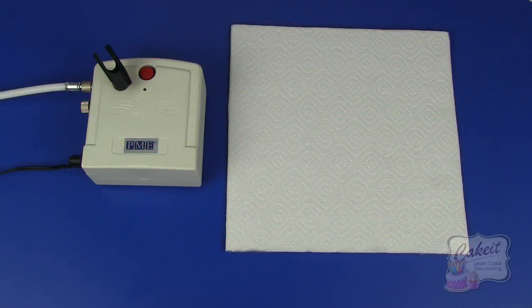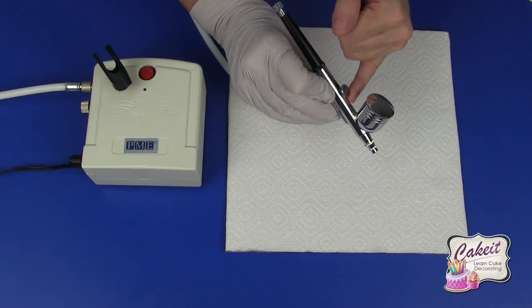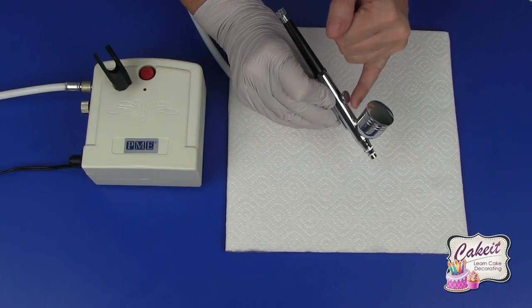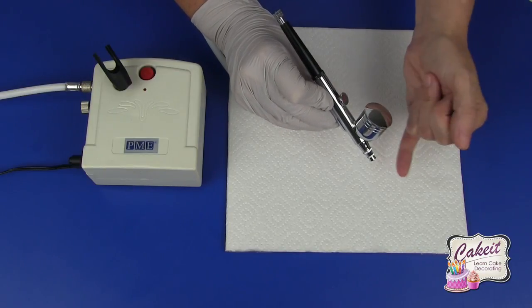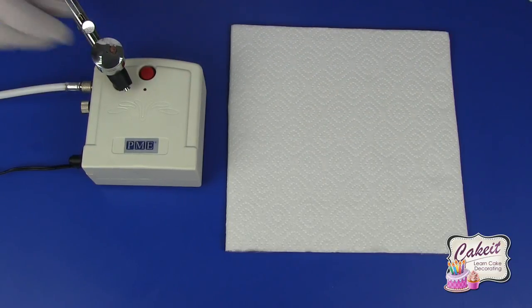First of all if we look at the airbrush, this is a single action gravity feed airbrush, which means it has a single action lever to control the airflow and a cup to feed the colour to the needle. First of all let's add some colour into the airbrush.